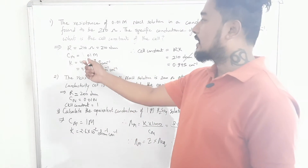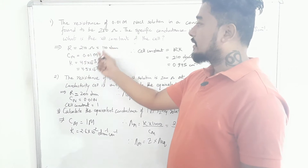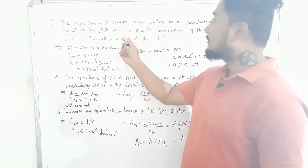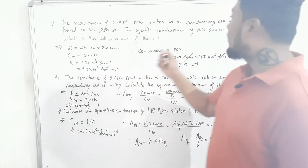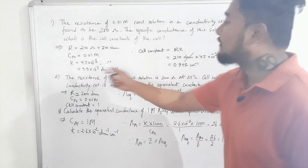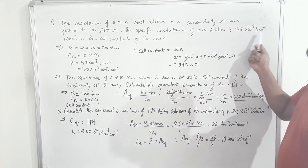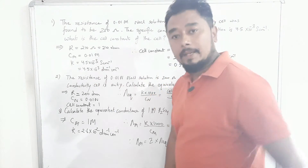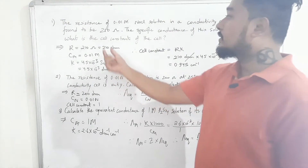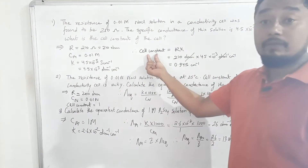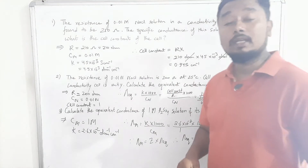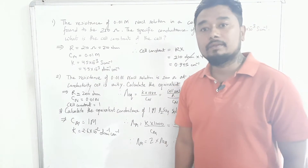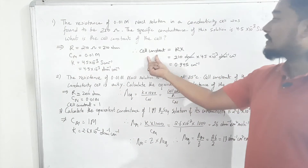Resistance is given as 210 Ω, concentration in molarity CM is 0.01 M, and specific conductance κ is 4.5×10⁻² S cm⁻¹. Do remember S (siemens) and ohm-inverse mean the same. The question asks us to find cell constant. The formula I gave you in the last class was: cell constant = R × κ, since neither l nor a is given, but R and κ are.